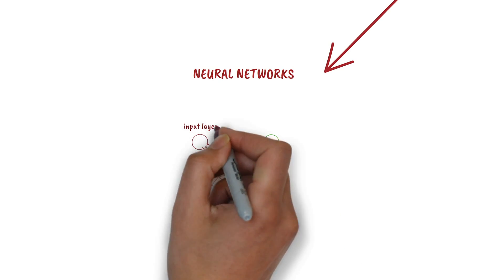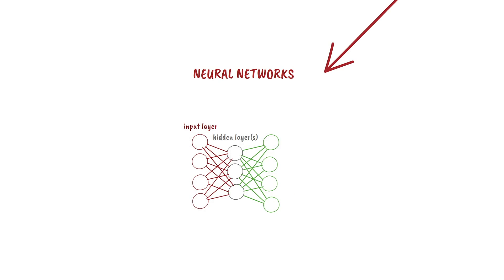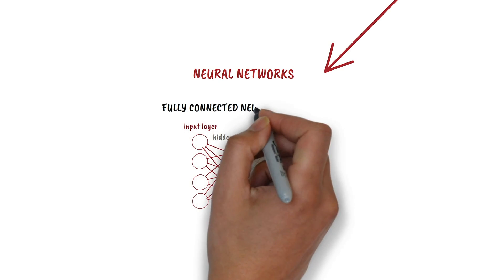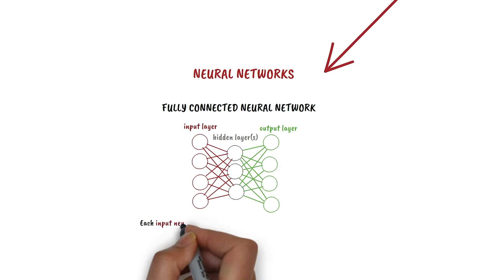There's an input layer, one or more hidden layers, and an output layer. And if all neurons from one layer are connected with each neuron of the next layer, it is called a fully connected neural network.